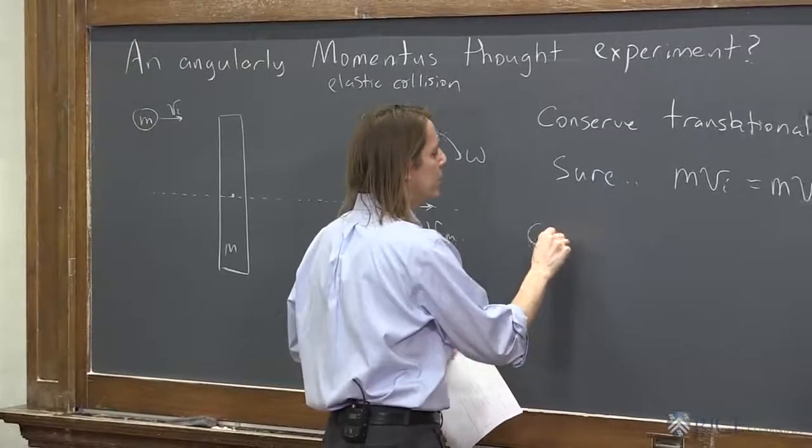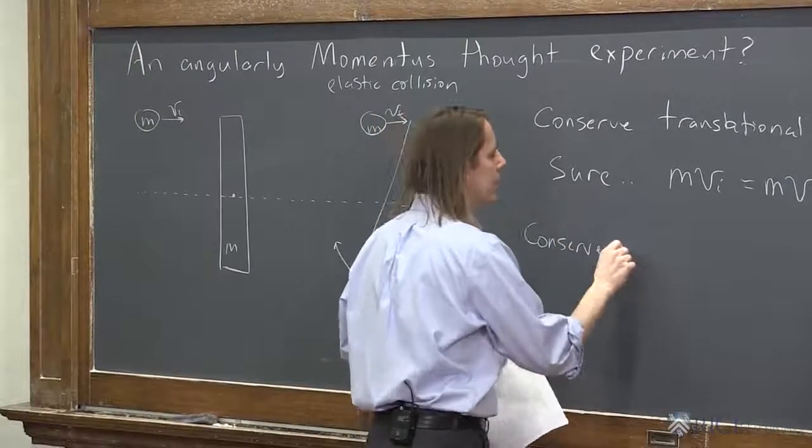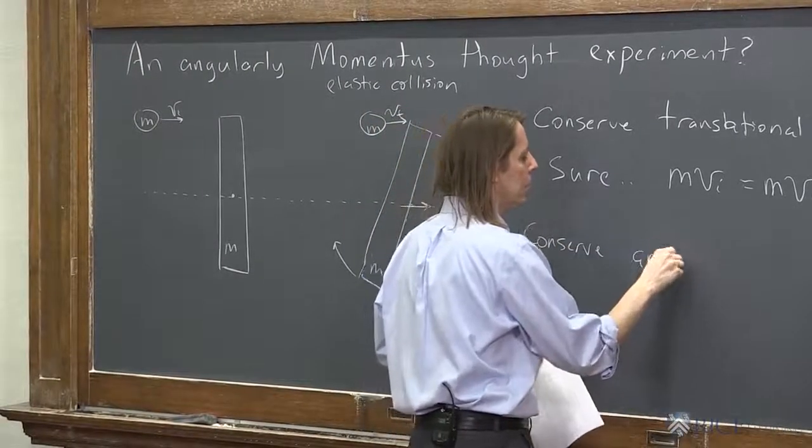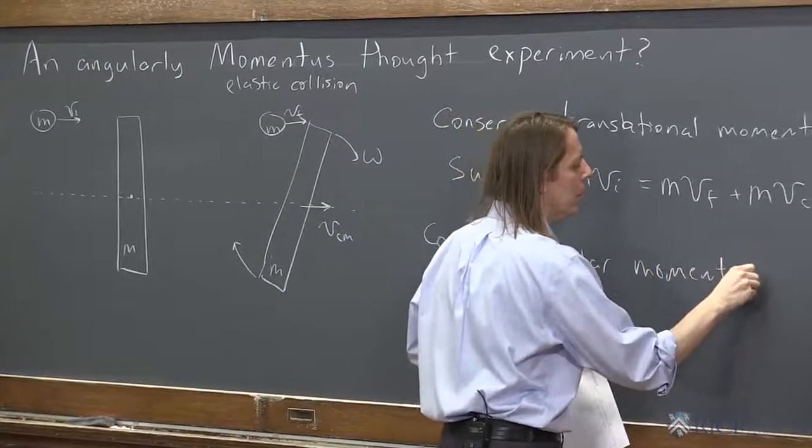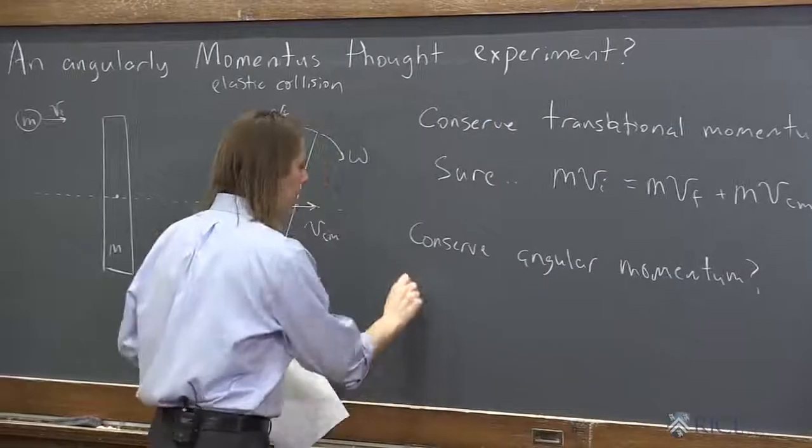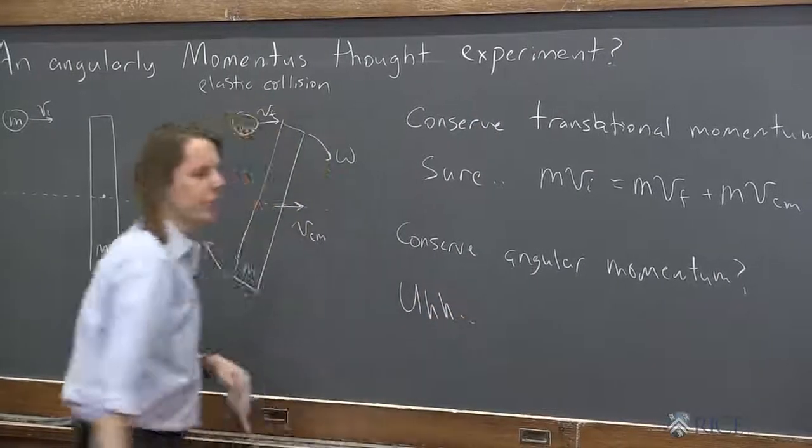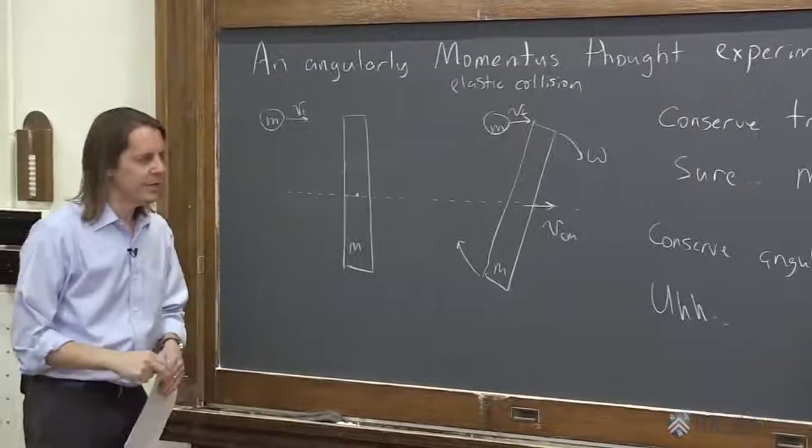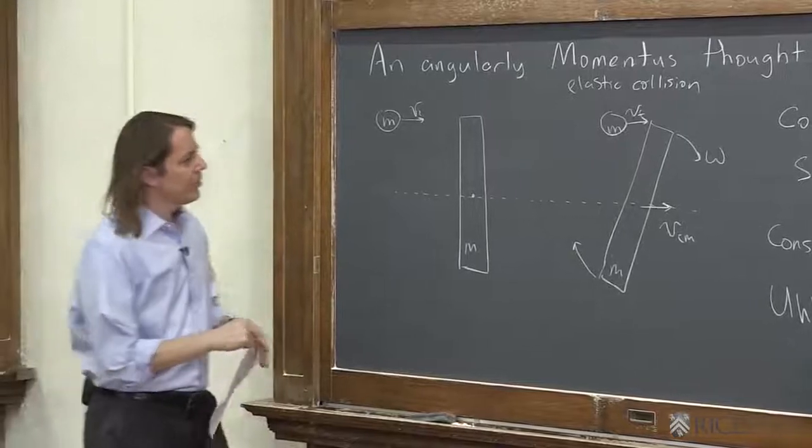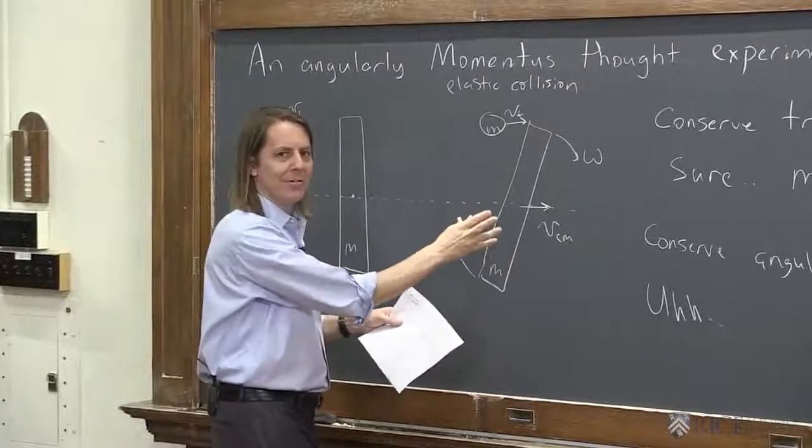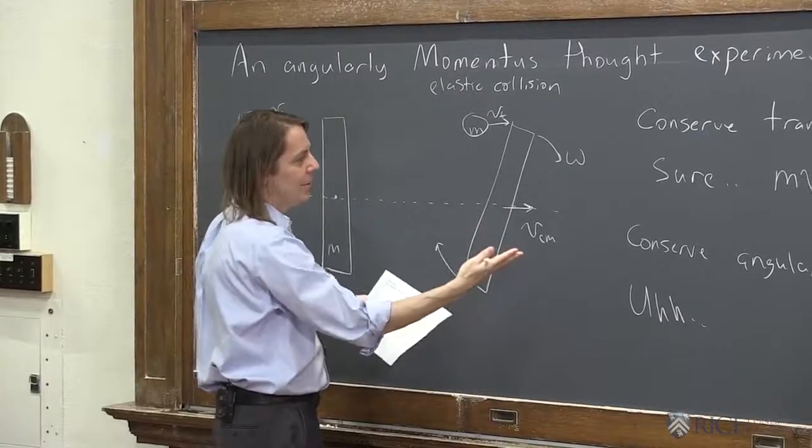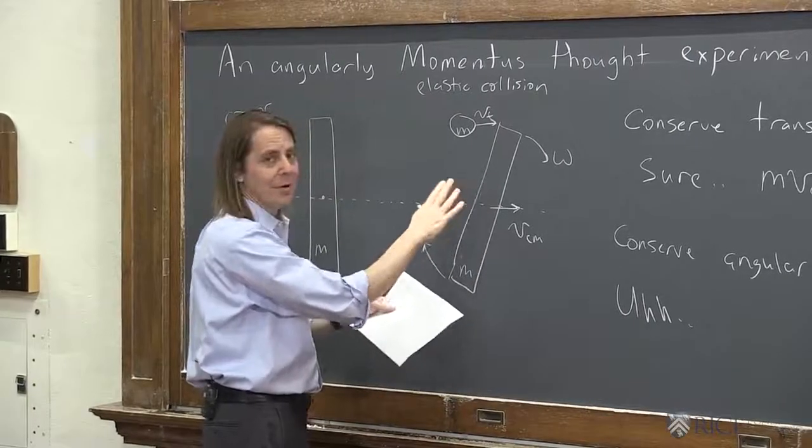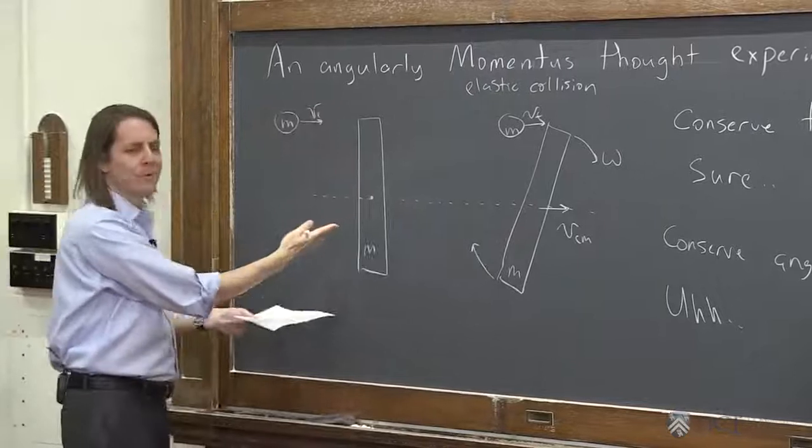But can we conserve angular momentum? This is the part that looks a little strange if you've only thought about rotating disks. Clearly we have some angular momentum here—if the bar is rotating at omega, we could say L equals I omega. There is angular momentum on this side. But where was the angular momentum here?